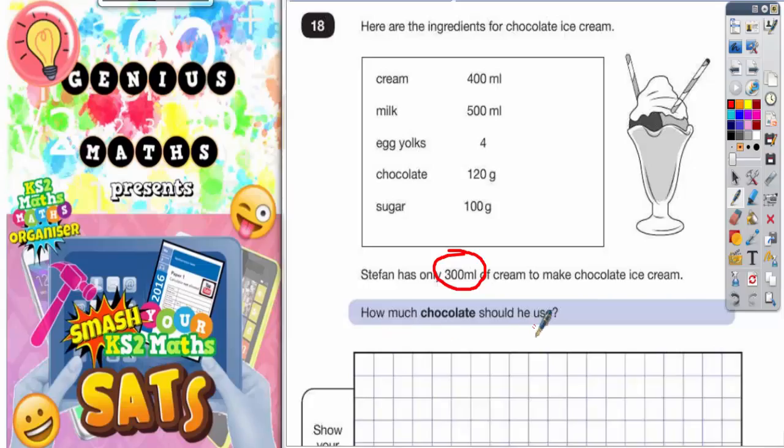How much chocolate should he use? Now let's just understand what's actually going on here. The recipe says he needs 400 milliliters of cream, but he hasn't got enough. He's only got 300. If you're going to change the amount of cream, you're going to also have to change the amount of the other ingredients.